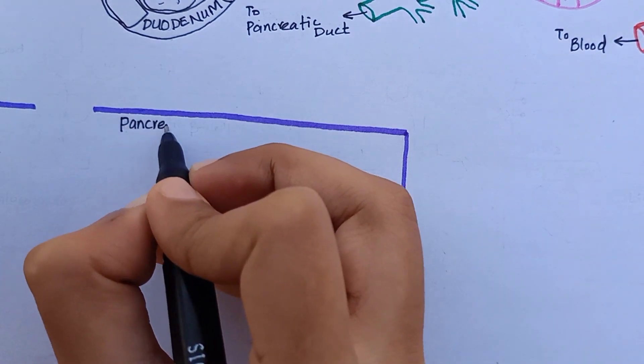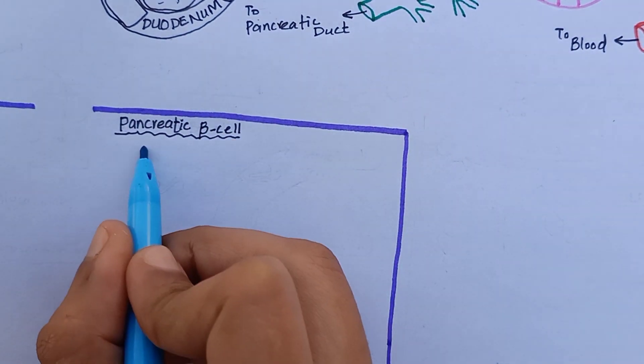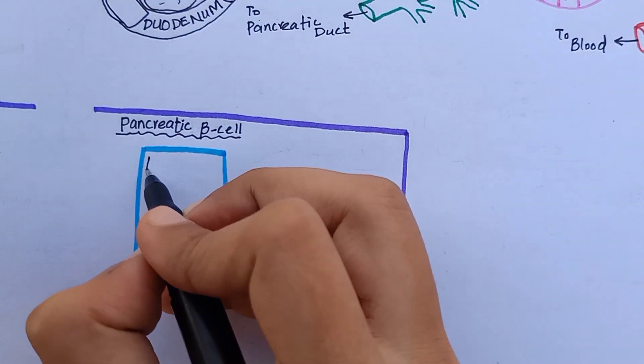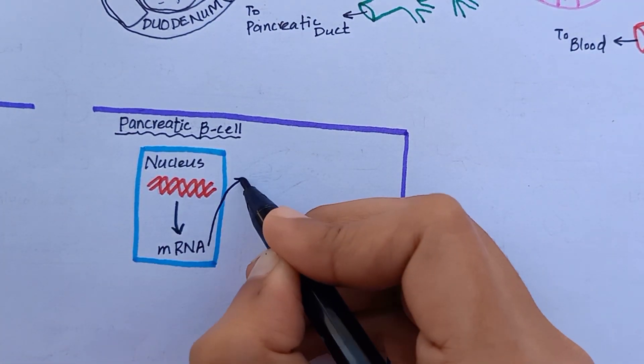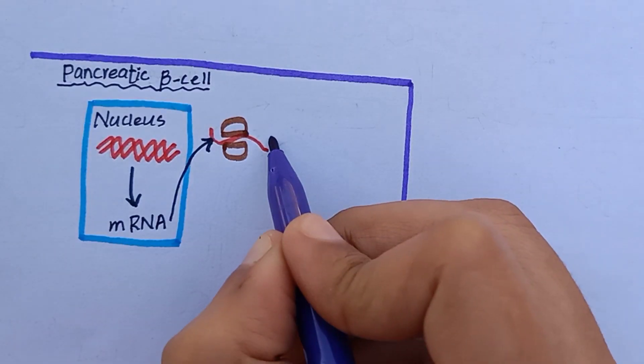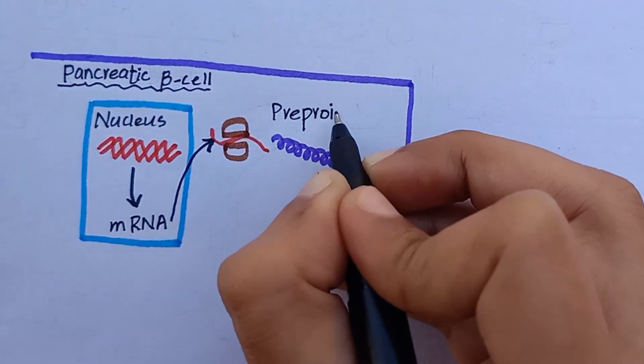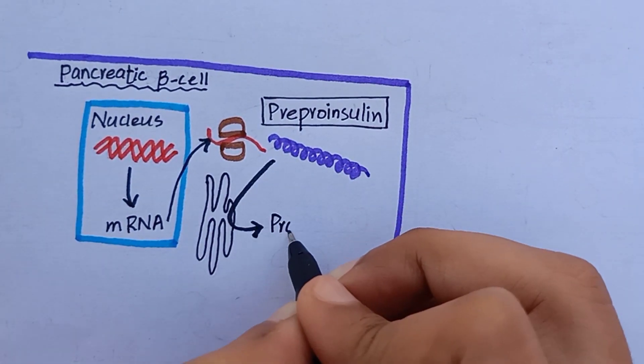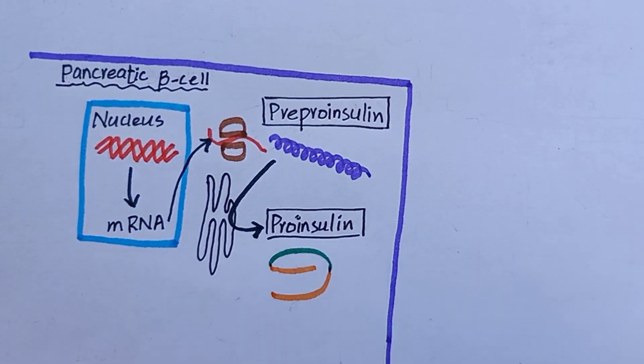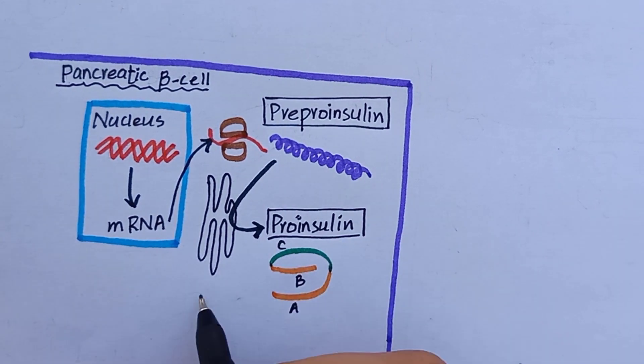Insulin is synthesized by the beta cell of pancreas by usual cell machinery of protein synthesis, beginning with the translation of insulin messenger RNA by ribosomes to form pre-proinsulin. Pre-proinsulin is then cleaved in endoplasmic reticulum to form proinsulin consisting of three chains of peptides A, B, and C.